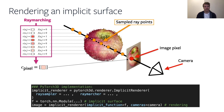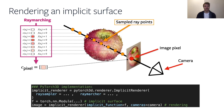Once we have the implicit function defined, we can run forward passes through the renderer. The forward pass of the renderer takes the actual implicit function, which is really just a pointer to the function, and because we want to render the implicit surface from a given viewpoint, it also takes the camera parameterization from which we want to emit the rendering rays. The result of the forward pass is the final rendered image.